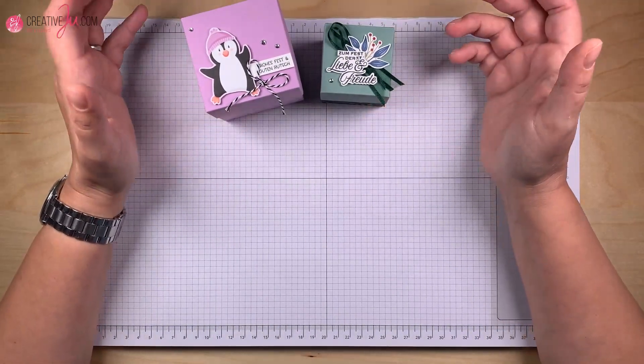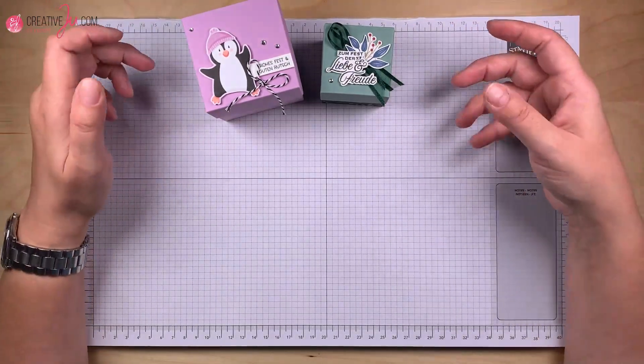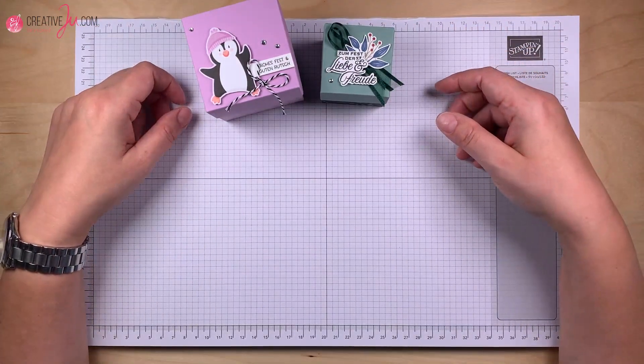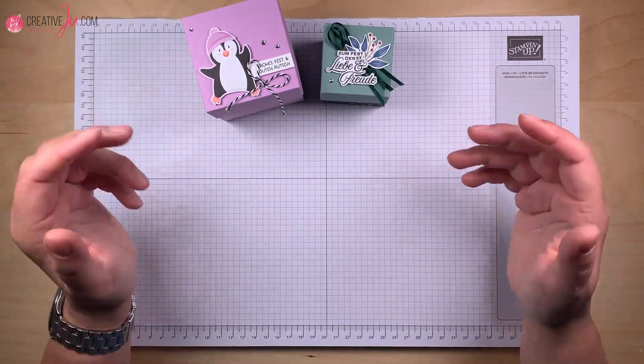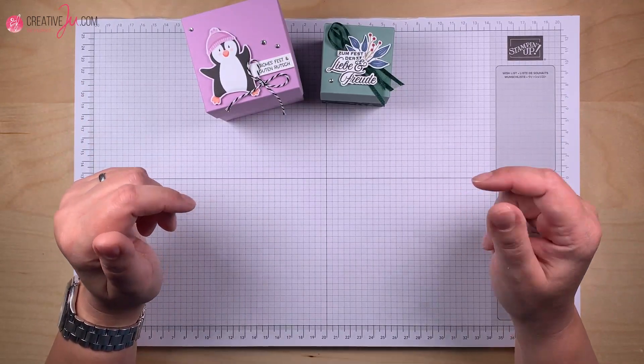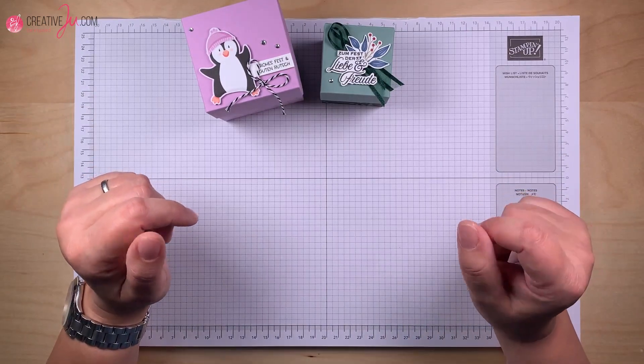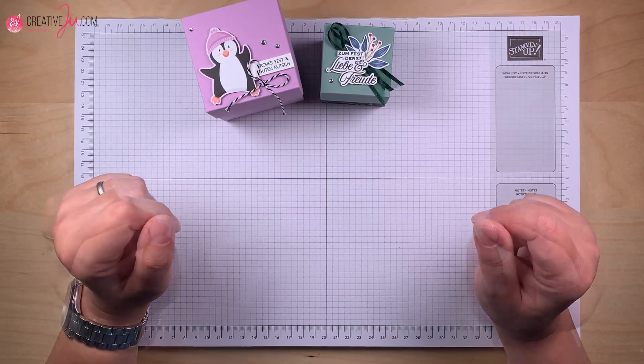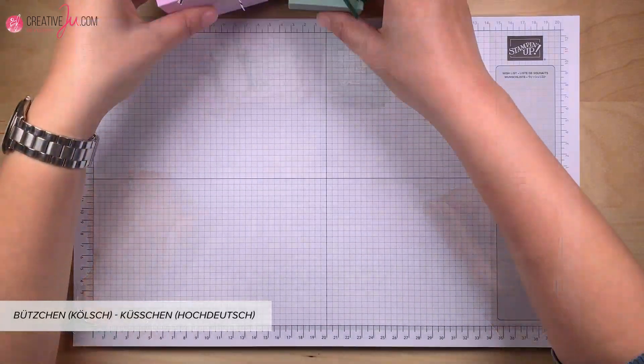Und zwar habe ich mir überlegt, hier im Rheinland haben wir ja jetzt diese Woche was Besonderes gehabt. Und zwar hat bei uns die fünfte Saison eröffnet, die Karnevalsaison am 11.11. um 11.11 Uhr. Besonders hier in Köln. Wir Polheimer zählen zwar nicht zu Köln, zu Berghain, aber wir fühlen uns so. Also anlässlich dazu würde ich gerne eine Kleinigkeit zeigen. Und zwar wie man Corona-gerecht Bützchen verteilen kann. Wir fangen an.